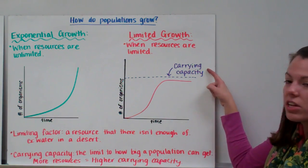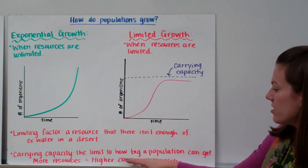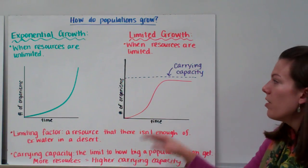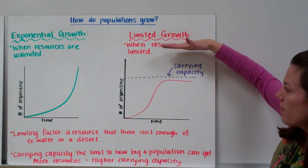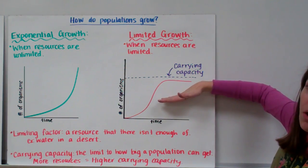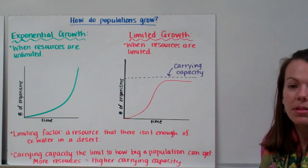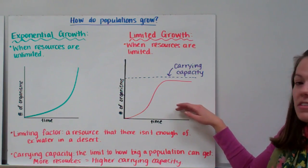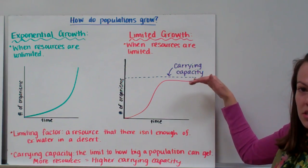The point at which the population levels off is called the carrying capacity — the limit to how big a population can get. If there are a lot of resources, the carrying capacity is high; if resources are low, the carrying capacity is lower. For example, in winter there are fewer plants for animals to eat, so the carrying capacity is lower, but in summer more plants grow and the carrying capacity increases.